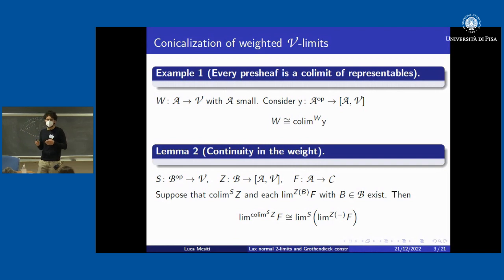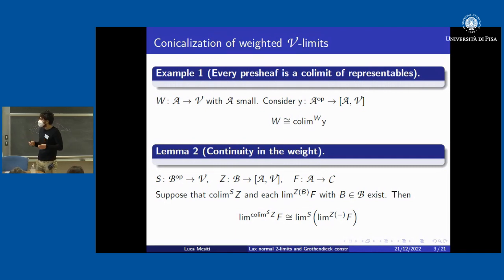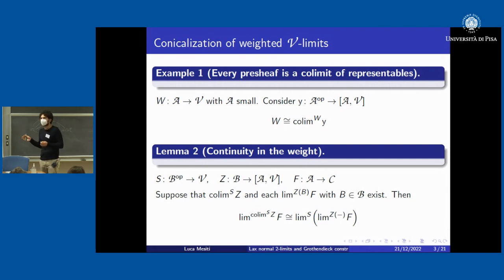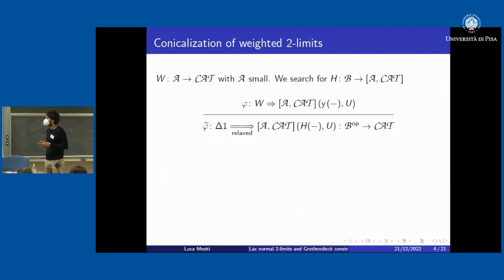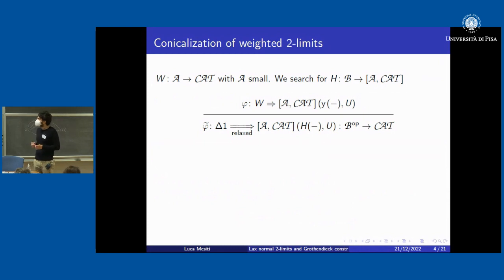There is a nice lemma of continuity of a limit in the weight: if we are able to essentially conicalize the special colimits of representables in a nice way, then we are able to conicalize every weighted limit. If we manage to have any weighted limit with S equal to delta-one on the left-hand side, we find a conical limit on the right, possibly simplified by the unit lemma.